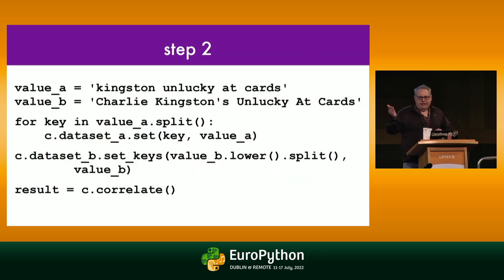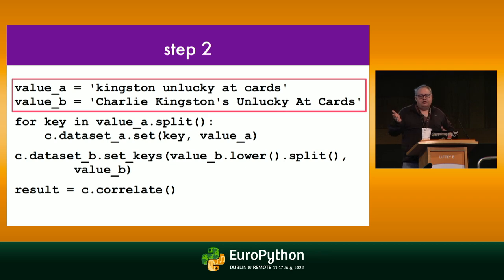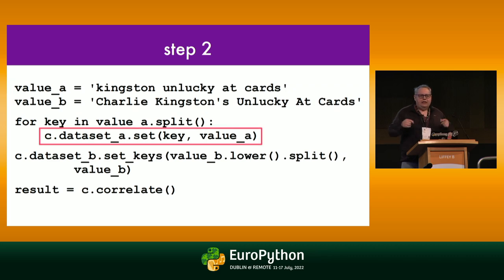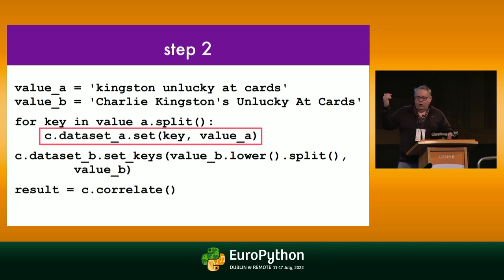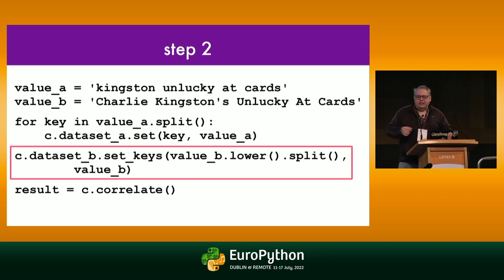Here's an example of calling the API. I'm creating two values — they're just strings, though they could be any Python object. You call set on the dataset you want to stuff the values into — dataset A or dataset B — setting the key equal to the value. You can set a key multiple times to a value, or a key to multiple values. Setting keys more than once is very interesting to Correlate. There's also a set_keys method which takes an iterable and sets all the keys from it at once.